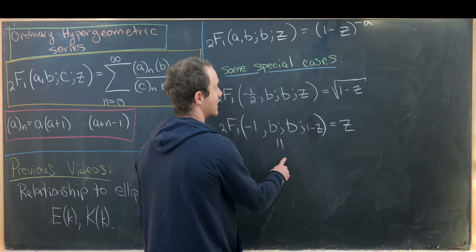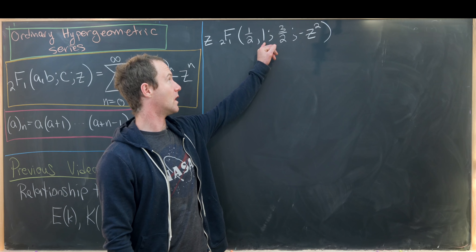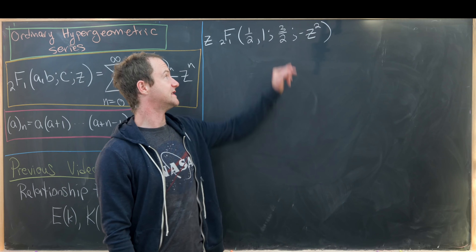For our last example, we look at the special case where we first multiply by z and then set a = 1/2, b = 1, c = 3/2, and replace z with -z². Using the definition, this becomes the sum from n=0 to infinity of (1/2)_n times (1)_n — which is n factorial — over (3/2)_n times n!, with a factor of (-1)^n and z^(2n+1).